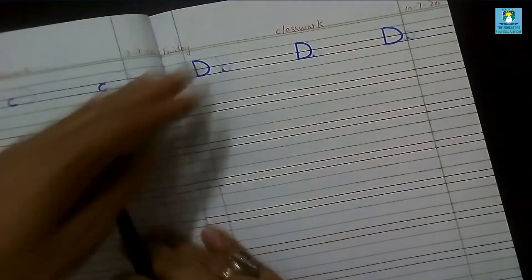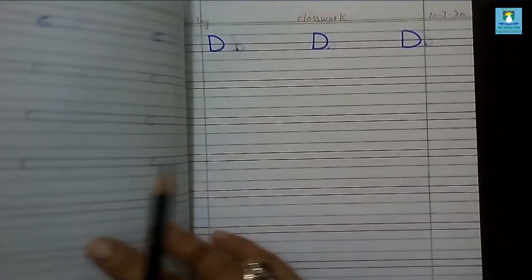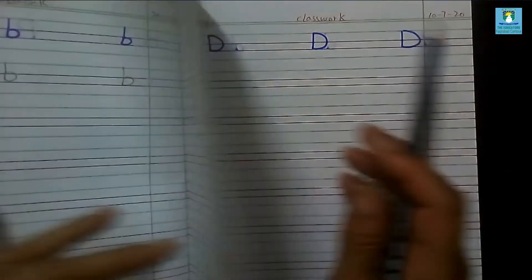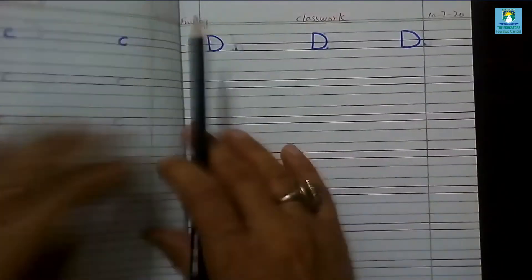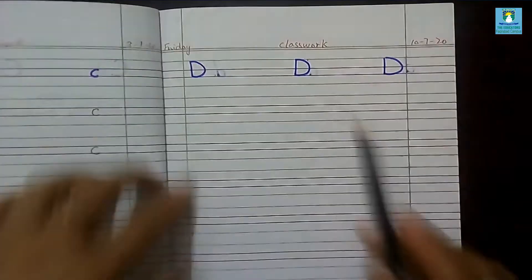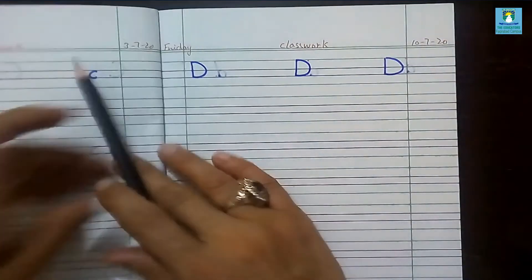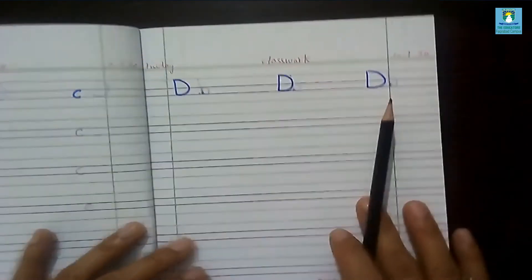Okay, now take out a new page. We have written the letters A, B, and C. Today we are going to write D. Understand students? First of all, you have to mention the day name here, then the date and classwork. Prepare a page for you.